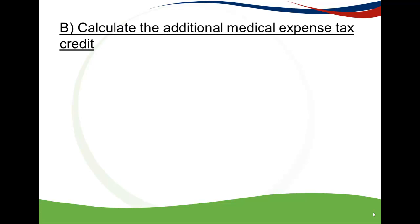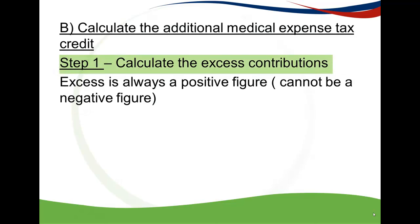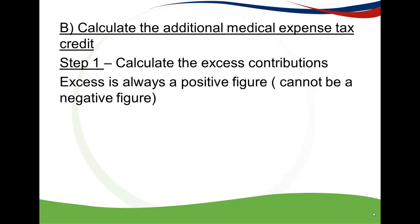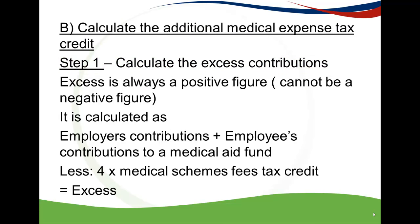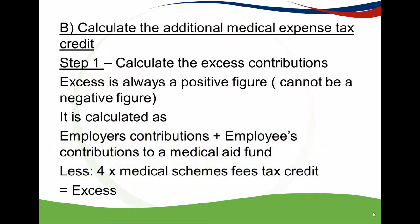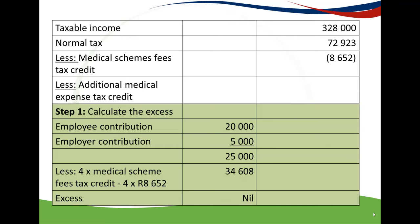The AMETC applies when your excess plus other qualifying medical expenses exceeds 7.5% of your taxable income. The first step is to calculate excess contributions — this must always be a positive figure, it can never be negative. The excess is calculated by taking the employer's contribution plus the employee's contribution and deducting four times your Medical Schemes Fees Tax Credit. If the result is positive, you have an excess; if negative, the excess is zero.